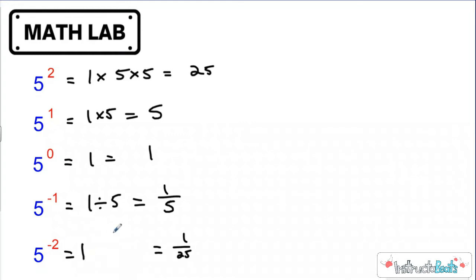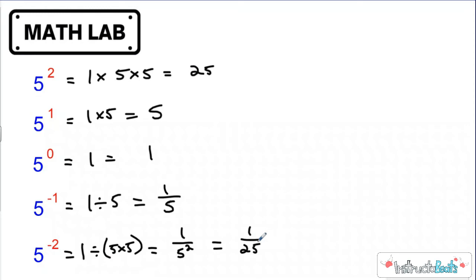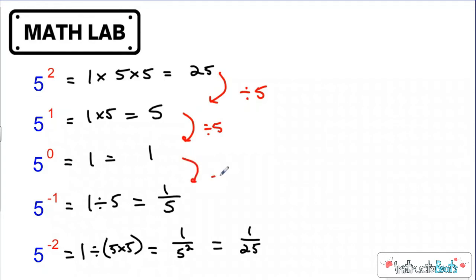Why does that work? Instead of multiplying this one by two copies of five, we are really dividing it by two copies of five, which when you write that would be one over five squared, which we know is one-twenty-fifth. Now hopefully you also see the pattern. Because you're multiplying by one less five each time, every time you go down a power, your standard form will be divided by five. Twenty-five divided by five is five. Five divided by five is one. One divided by five would be one-fifth. And one-fifth divided by five would be one-twenty-fifth.